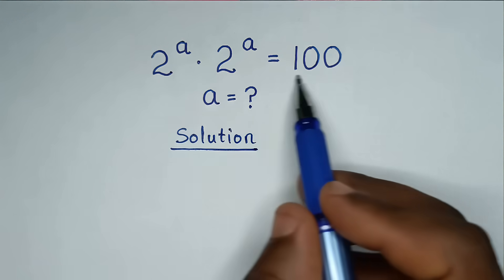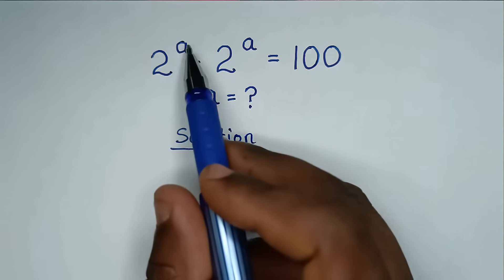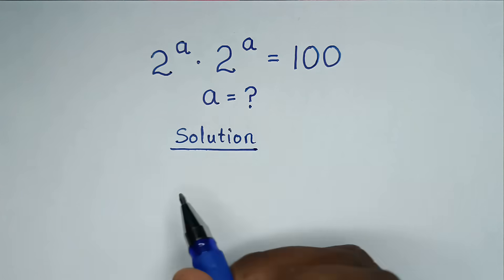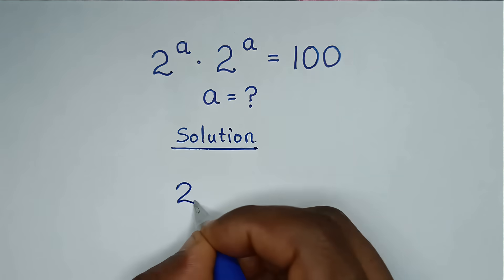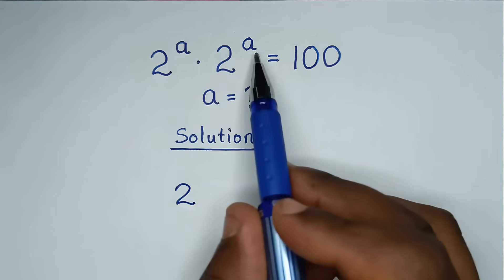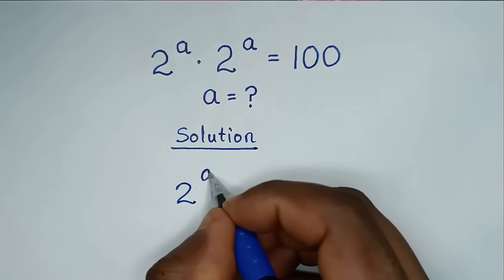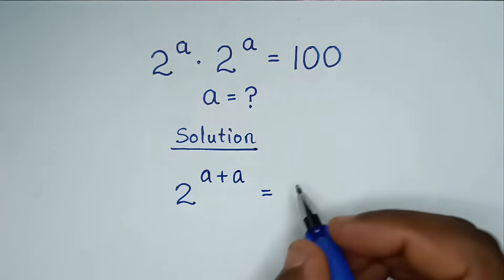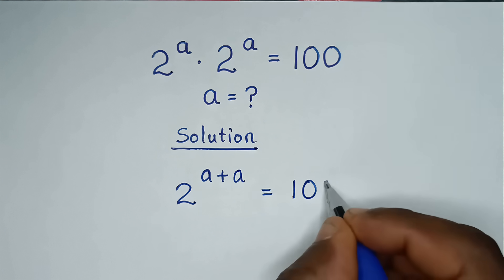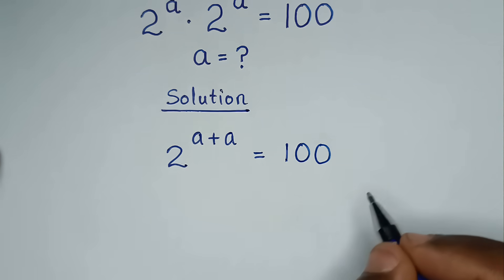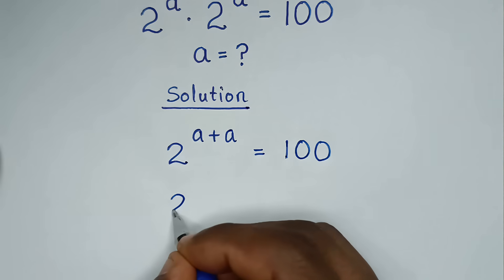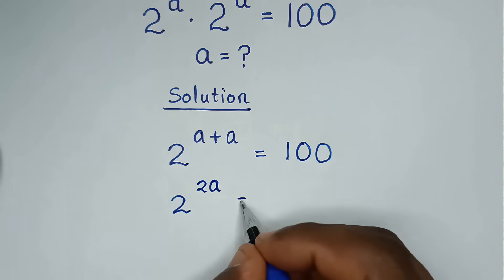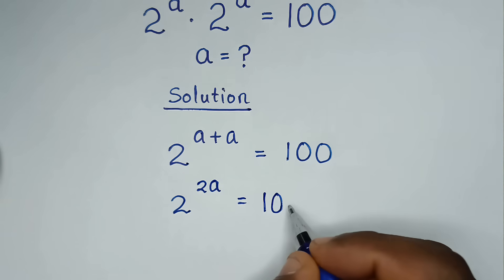From this problem, on the left side, 2 power a times 2 power a — it is the same base of 2, so we add the powers: a plus a is equal to 100. Then in the next step, it will be 2 power of (a plus a), which is 2a, is equal to 100.